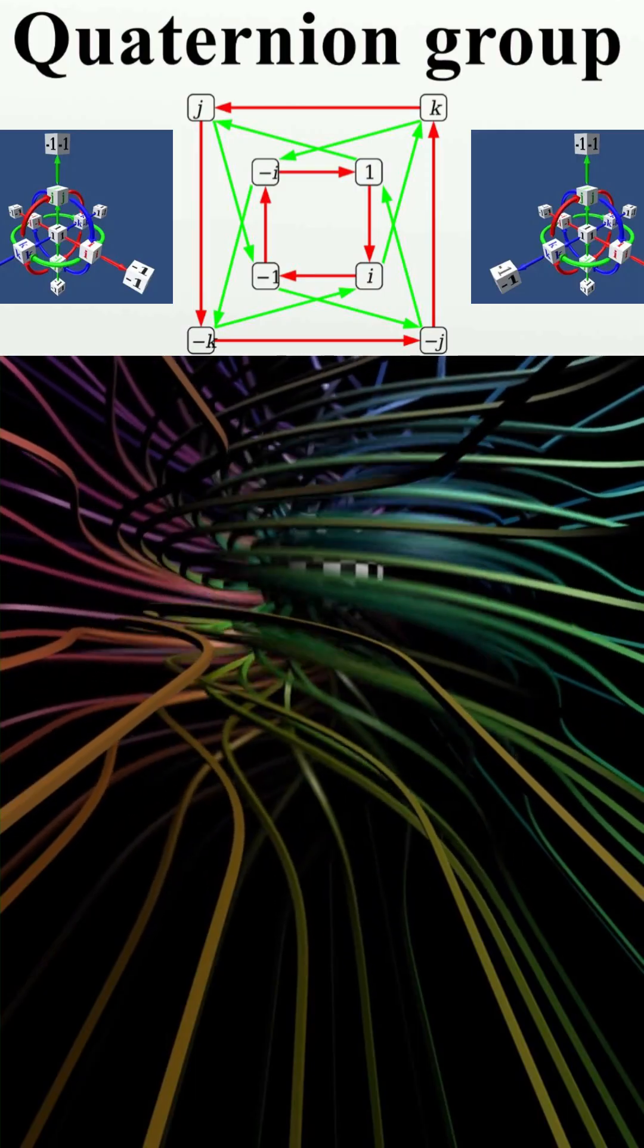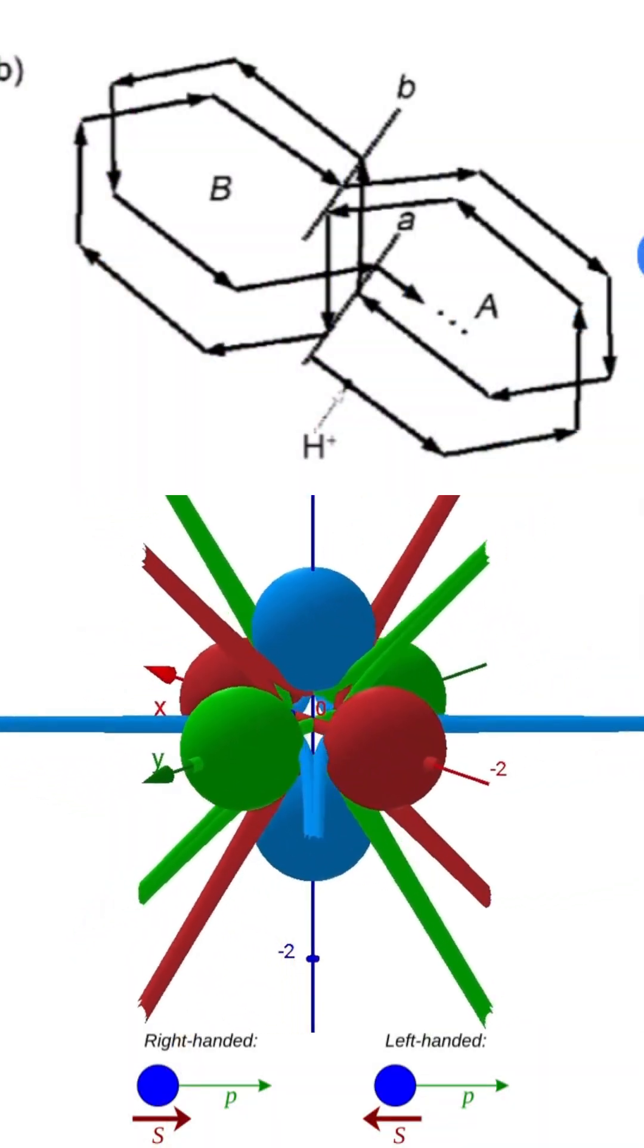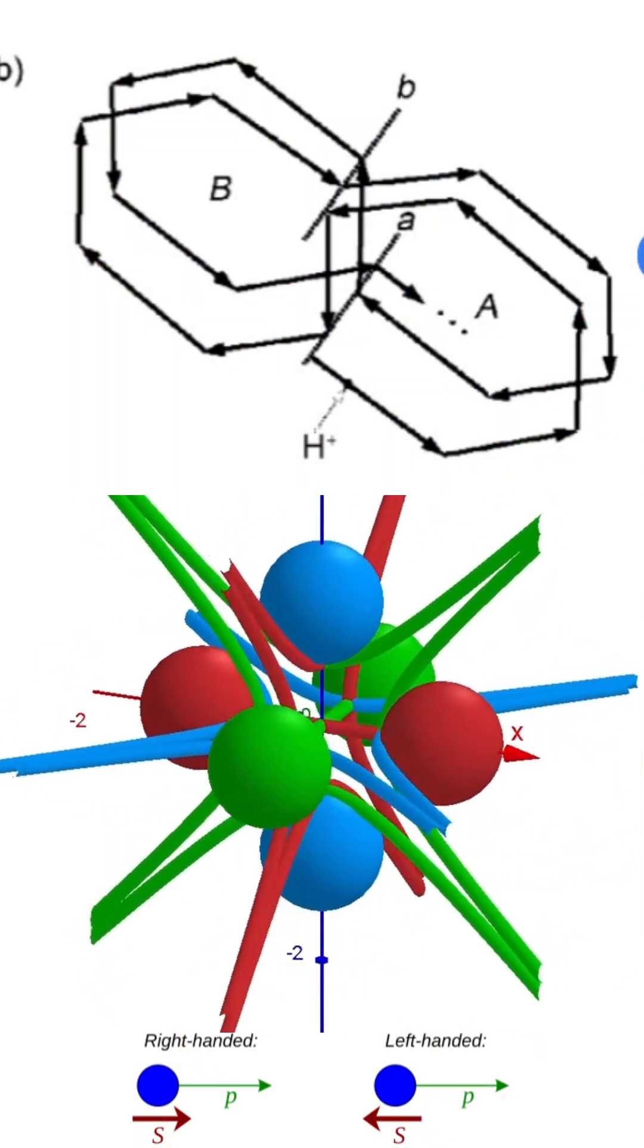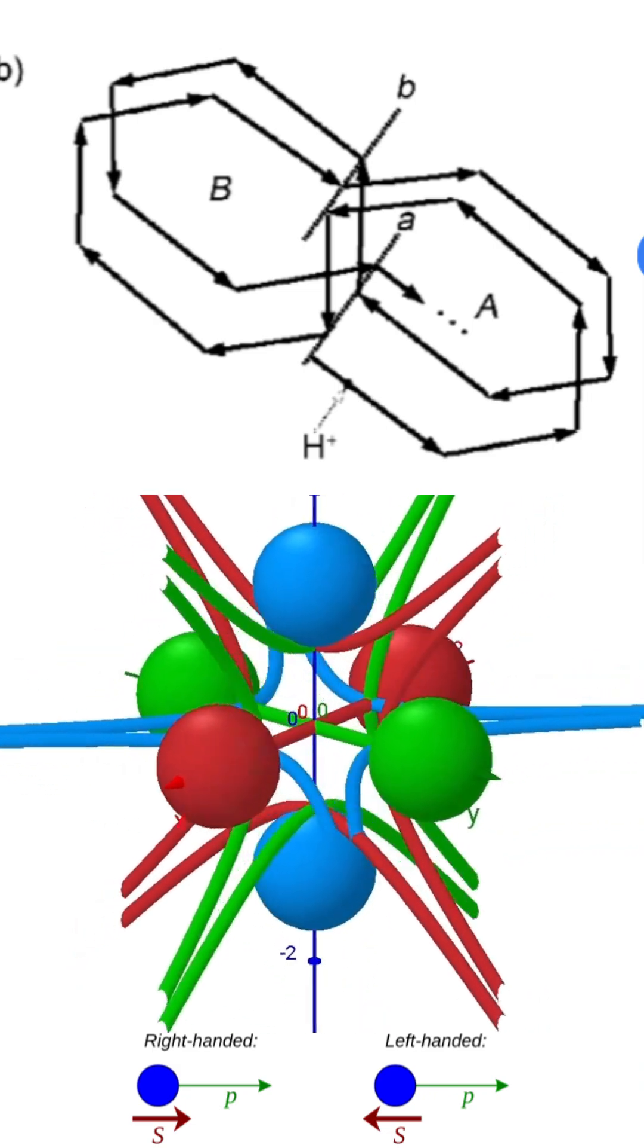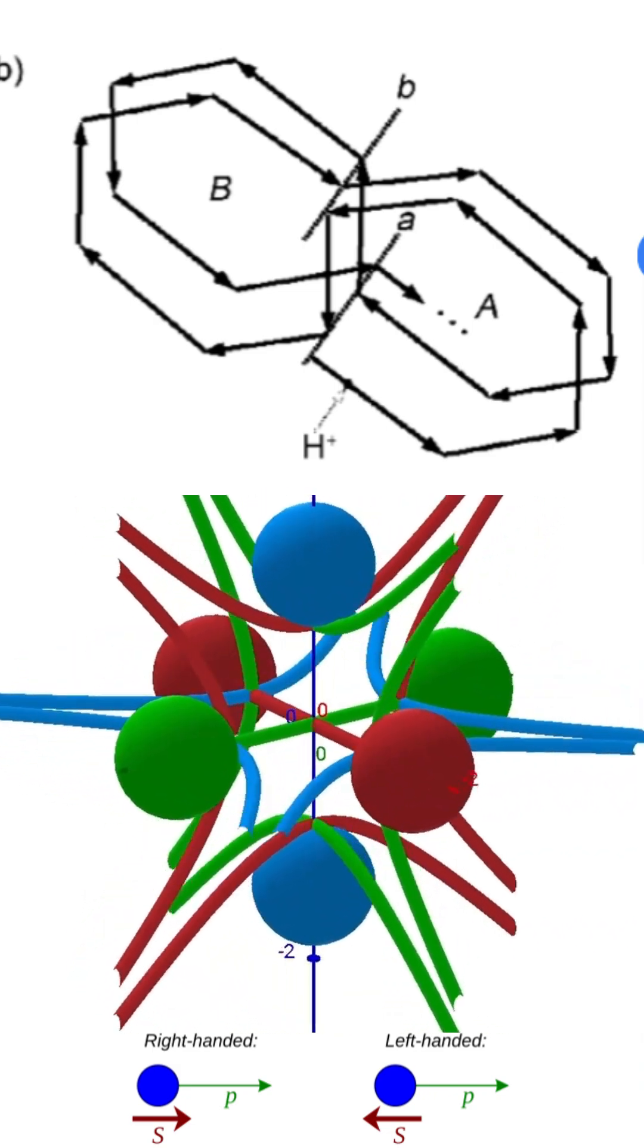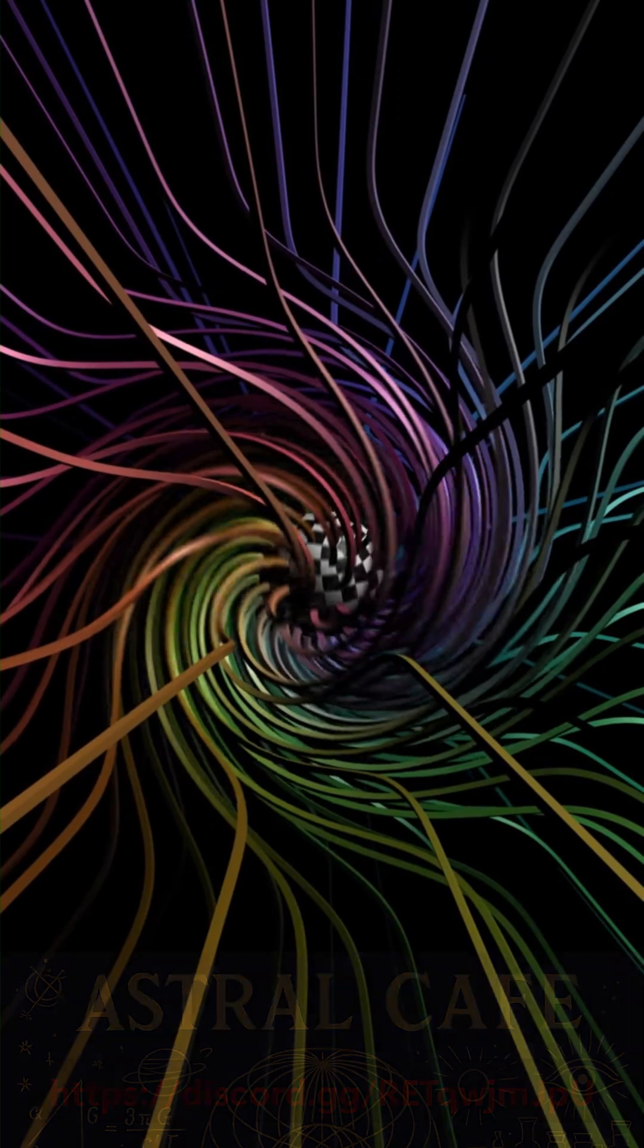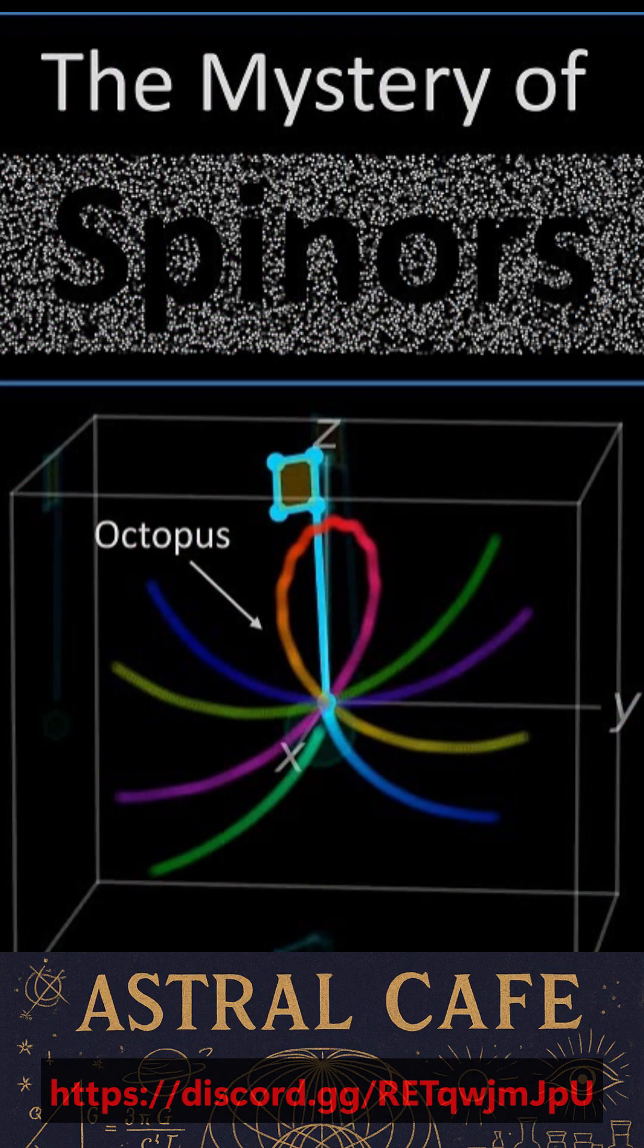At the core, spinors connect geometry and quantum reality. They show us that the structure of space isn't fully captured by vectors and rotations alone. To truly describe the fabric of matter, we need spinors, the hidden building blocks of spin and symmetry in the quantum world.